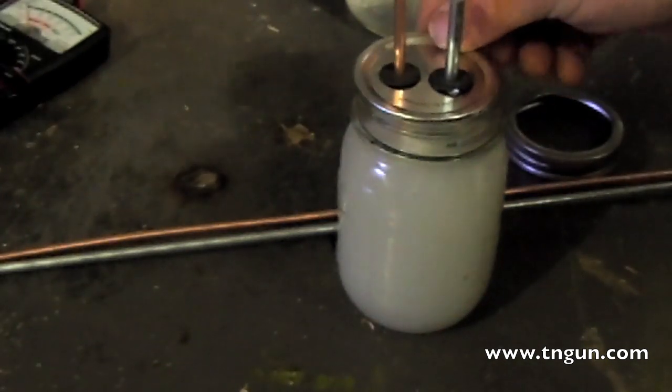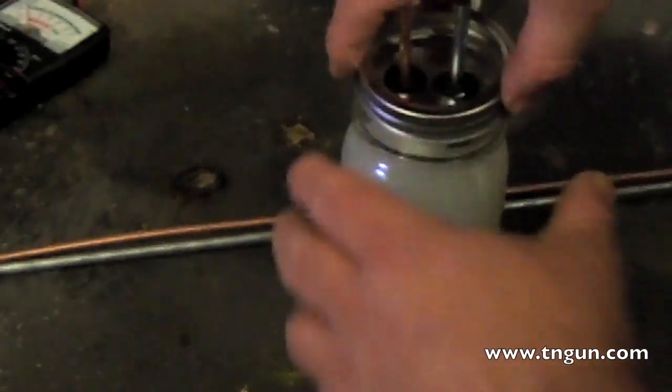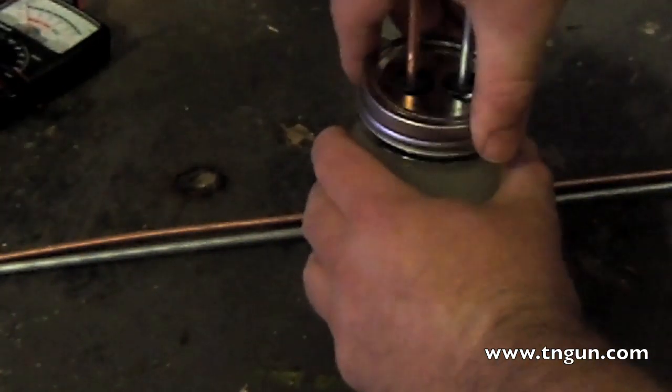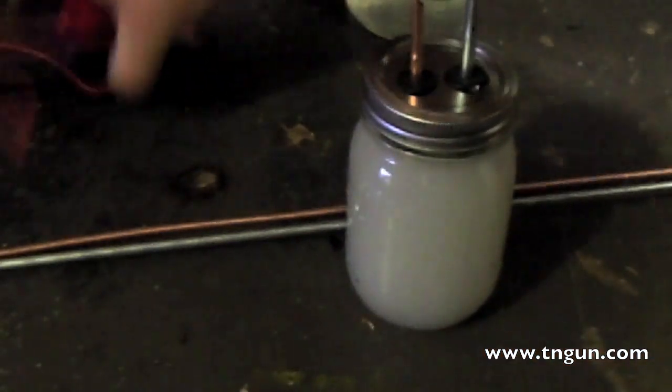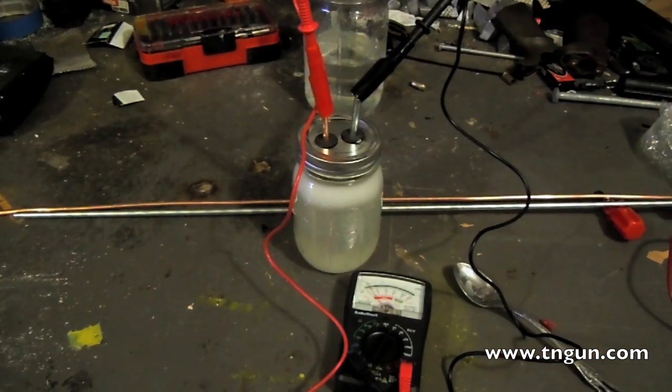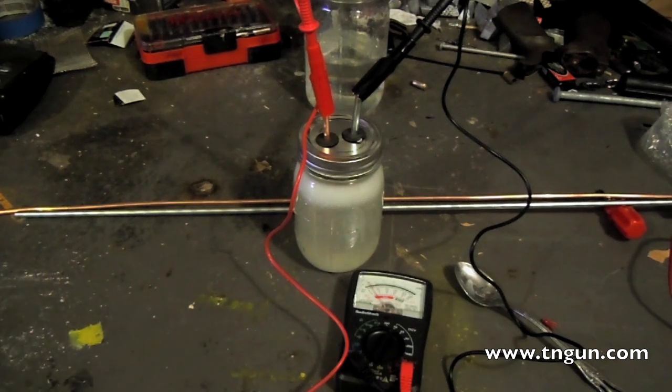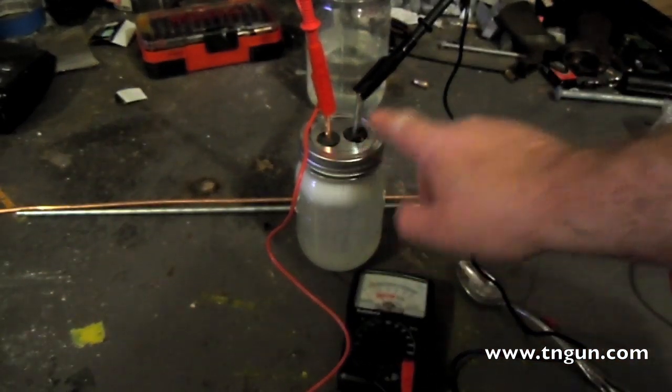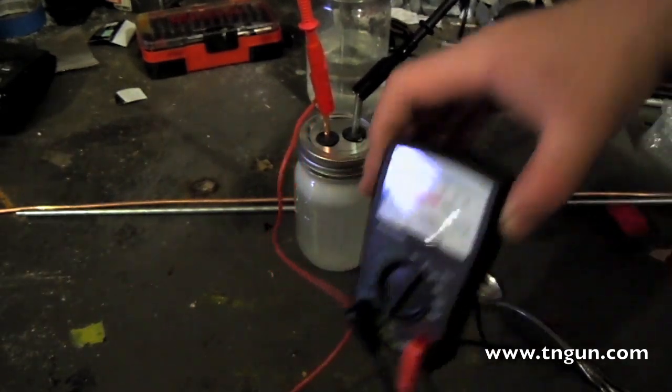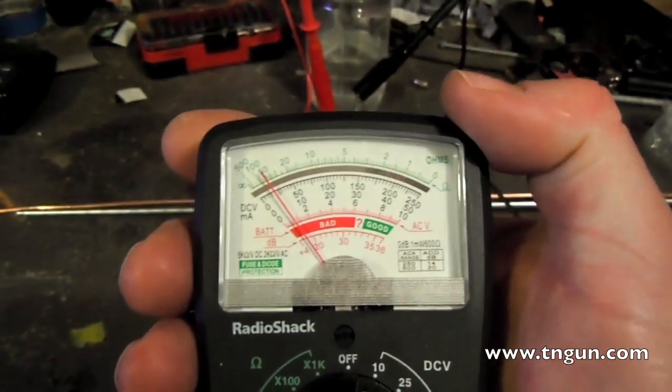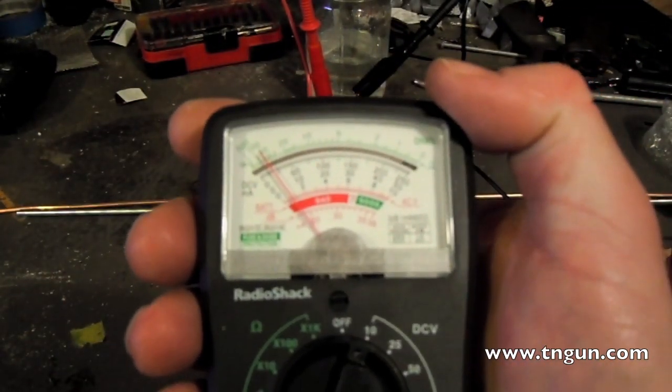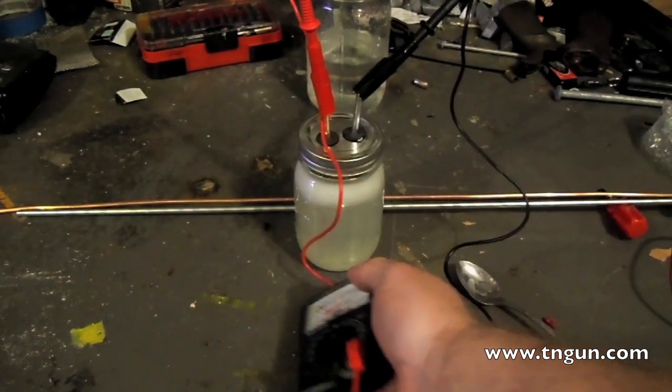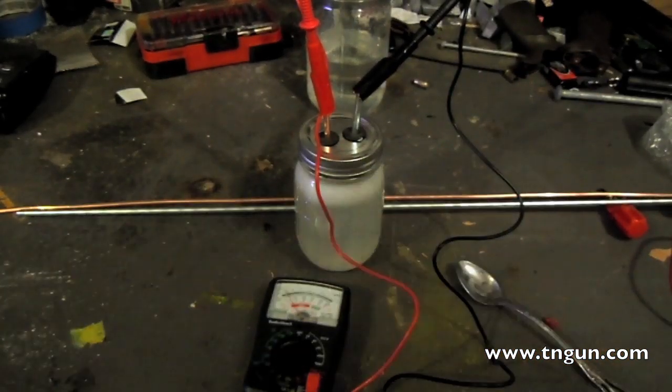Like that now, okay. So I hook the multimeter lead positive to the copper, negative to the aluminum, gets me about a volt of electricity which a volt of electricity is not a lot.